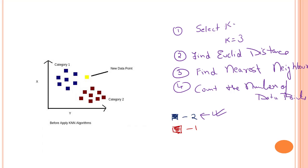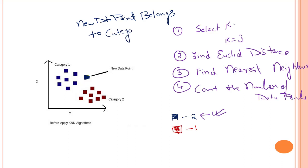Our model is finished and this new data point will become blue. We can say that our new data point belongs to category one. That's how the K Nearest Neighbor algorithm works. In our next video we are going to look into some of the ways by which we can find out the value of k. So let's catch up in our next video.